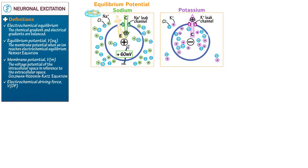Draw an opposing electrical gradient. Draw a voltmeter and indicate that the membrane potential of potassium is negative 90 millivolts, which, as we'll see, is similar to the neuronal membrane potential. Let's address the neuronal membrane potential now.